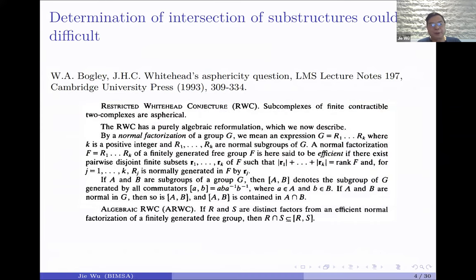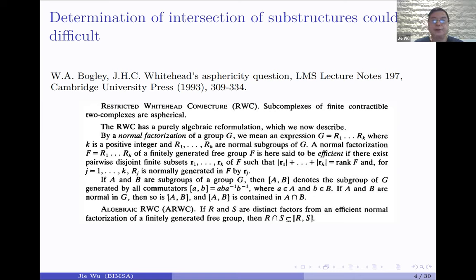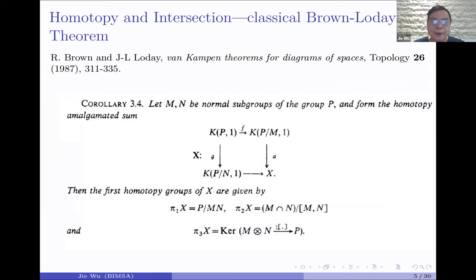The previous talk already mentioned why there is a spherical question. In the algebraic version, you get a free group of a finite rank, you get some special subgroups satisfying certain conditions. The equivalent algebraic situation is that there is an obvious part: you look at the commutator of two subgroups, which should be contained in the intersection subgroup. The question is whether they should be equal.